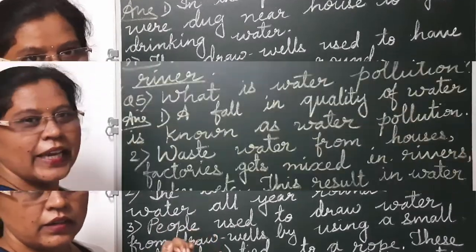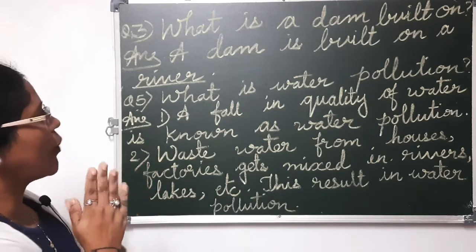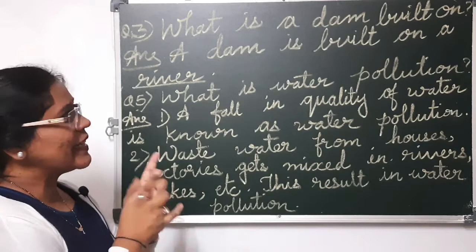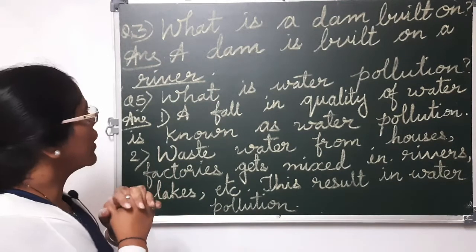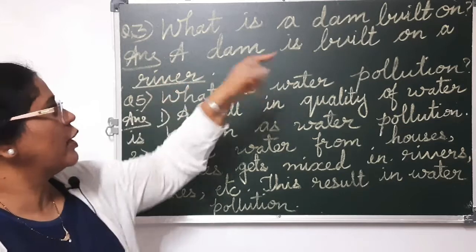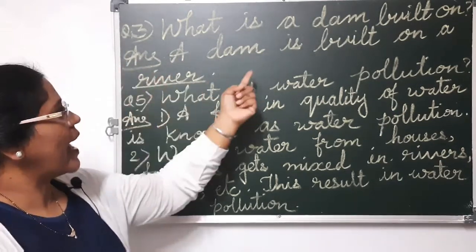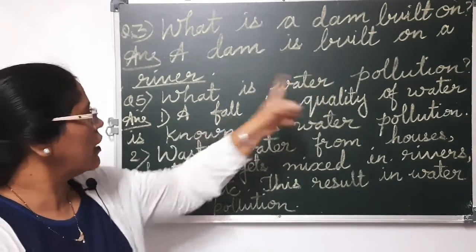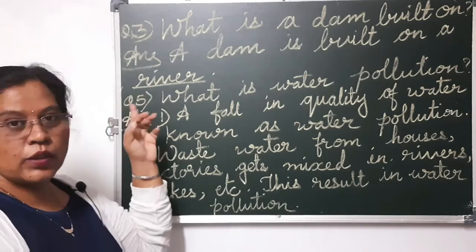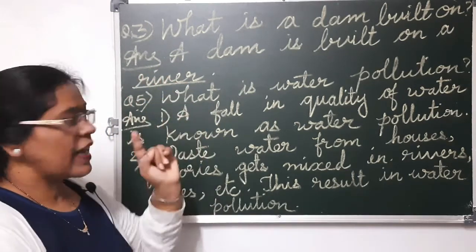Third question: what is a dam built on? The answer is: a dam is built on a river.